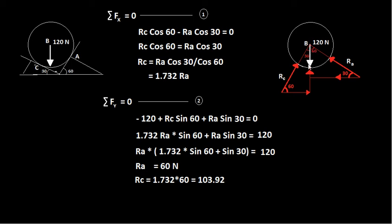The three vertical forces are: (1) the mass of the body acting downwards, (2) the vertical component of reaction RC acting upward, and (3) the vertical component of reaction RA acting upward. Taking upward forces as positive and downward as negative, the equilibrium equation is: −120 + RC sin60 + RA sin30 = 0.